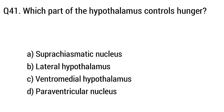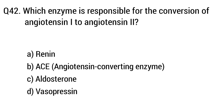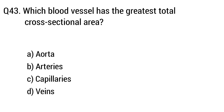Question 41. Which part of the hypothalamus controls hunger? The right answer is Option B: Lateral hypothalamus. Question 42. Which enzyme is responsible for the conversion of angiotensin I to angiotensin II? The right answer is Option A: ACE — Angiotensin Converting Enzyme.